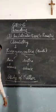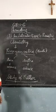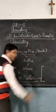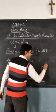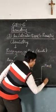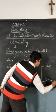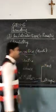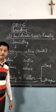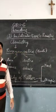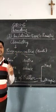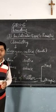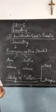Now the question arises, what is matter? Matter is anything which has mass and occupies space. So anything in the world which is having some mass and which is occupying some space will come in the category of matter.